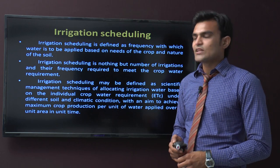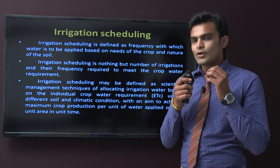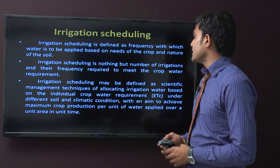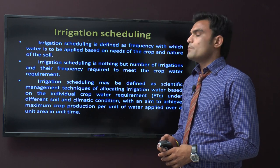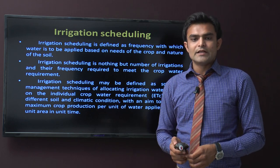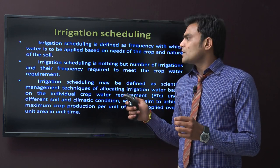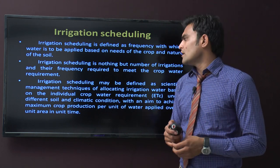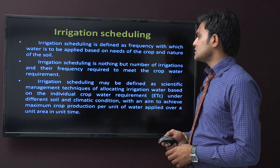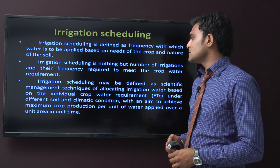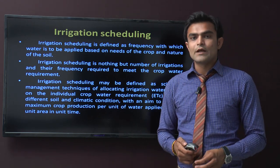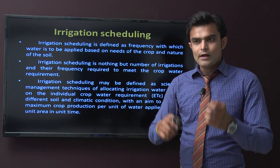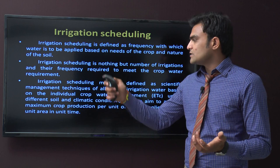Irrigation scheduling is the most important thing for the sowing of crop. Irrigation scheduling is defined as the frequency with which water is to be applied based on the need of the crop and nature of the soil. There are very different types of soils available, and according to soil type there is different scheduling of irrigation. Irrigation scheduling is nothing but the number of irrigations and their frequency required to meet the crop water requirement — how much irrigation the crop requires.